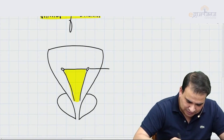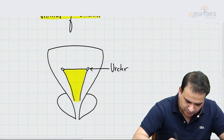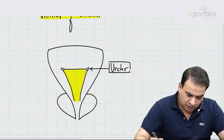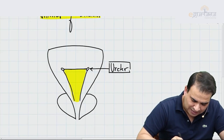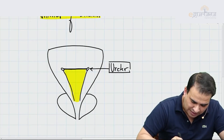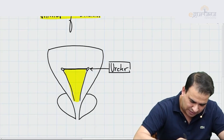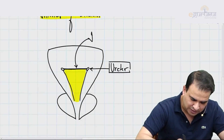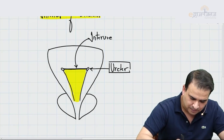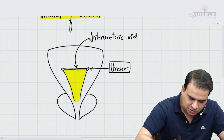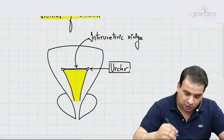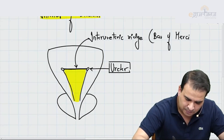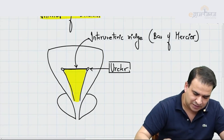Starting with, this is the opening of the ureter, opening on the posterior wall of the bladder. Between the two ureteric openings there is an elevation, which is an important landmark in cystoscopy — that is called the interureteric ridge. This elevation is also called the Bar of Mercier.